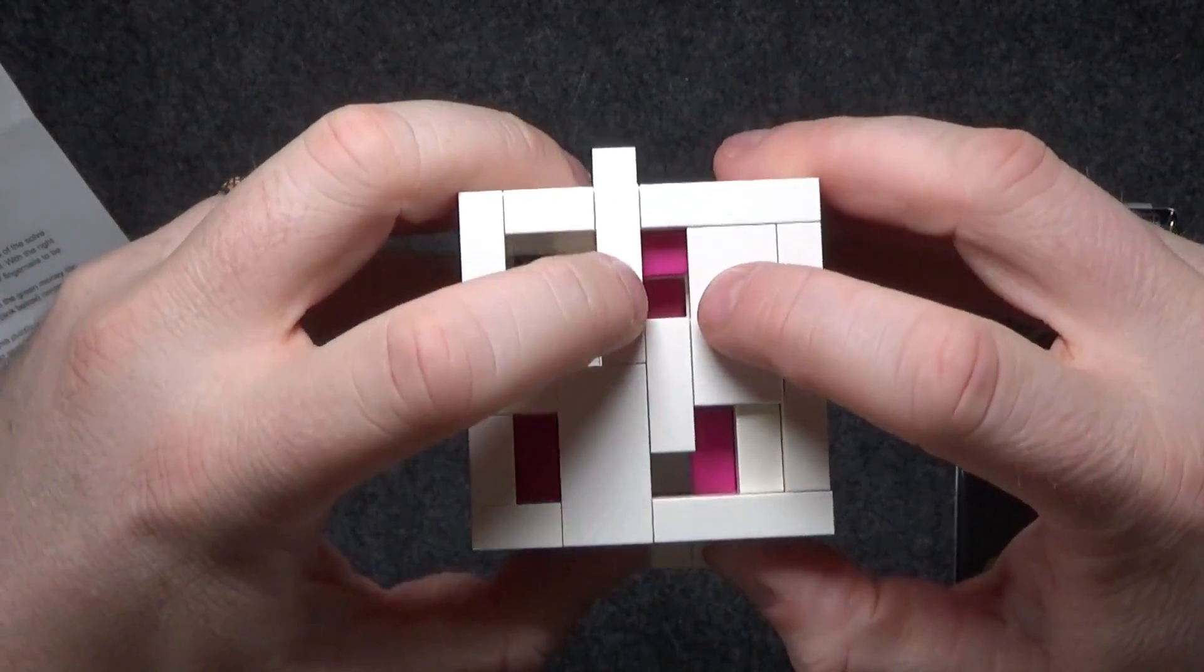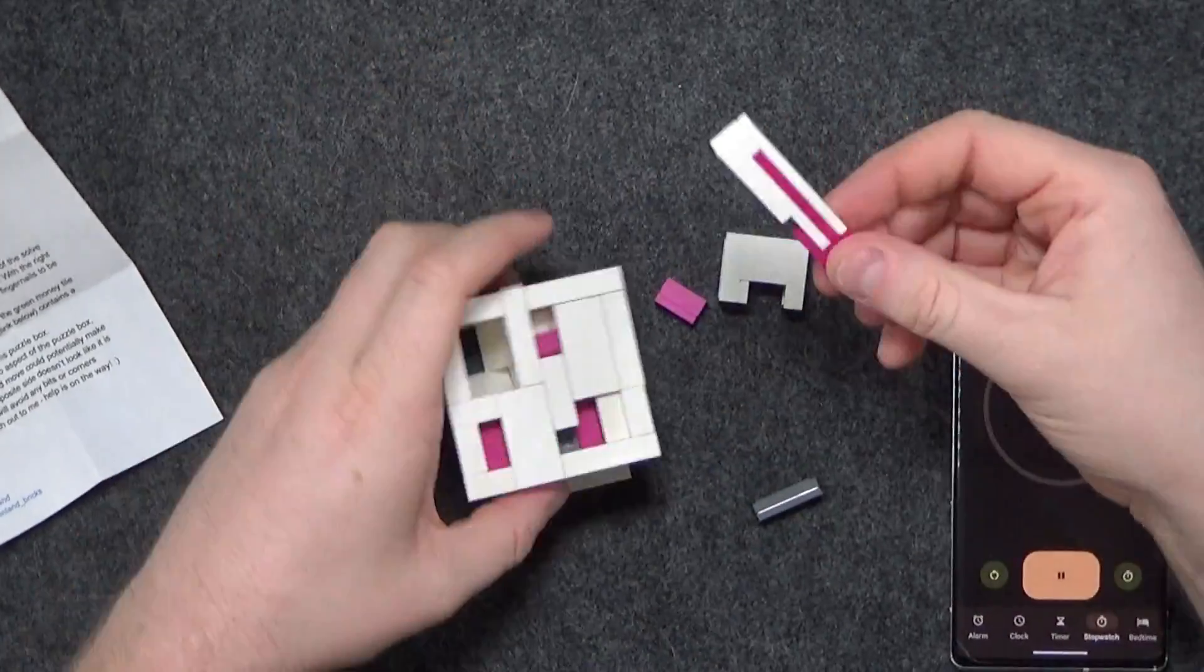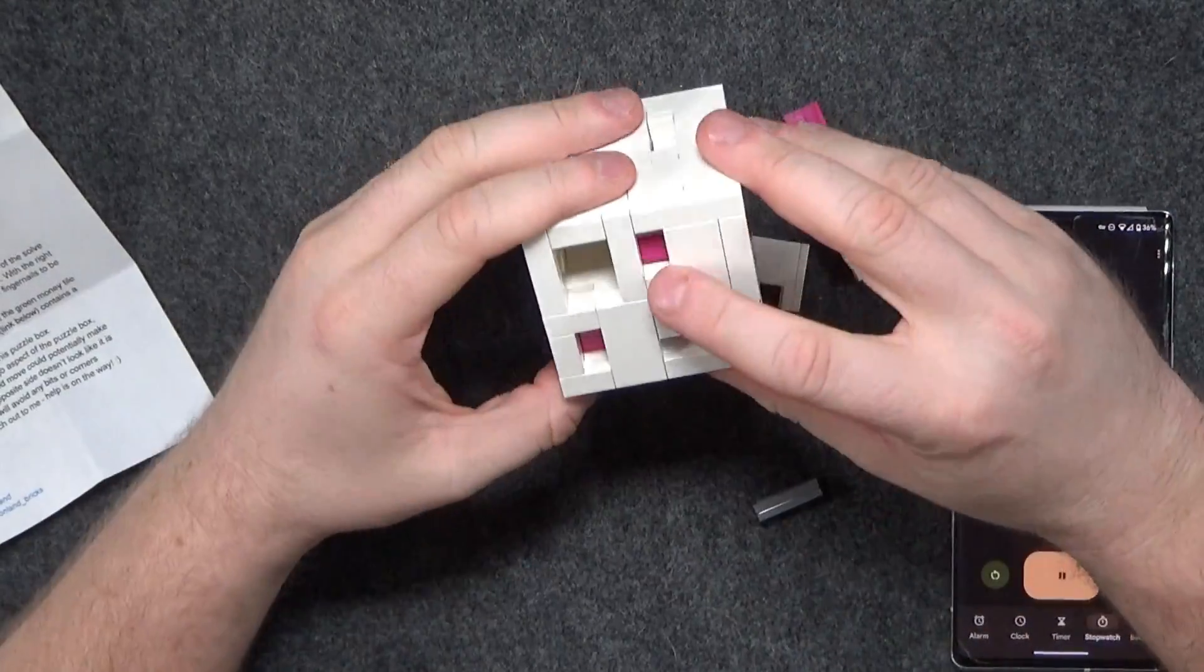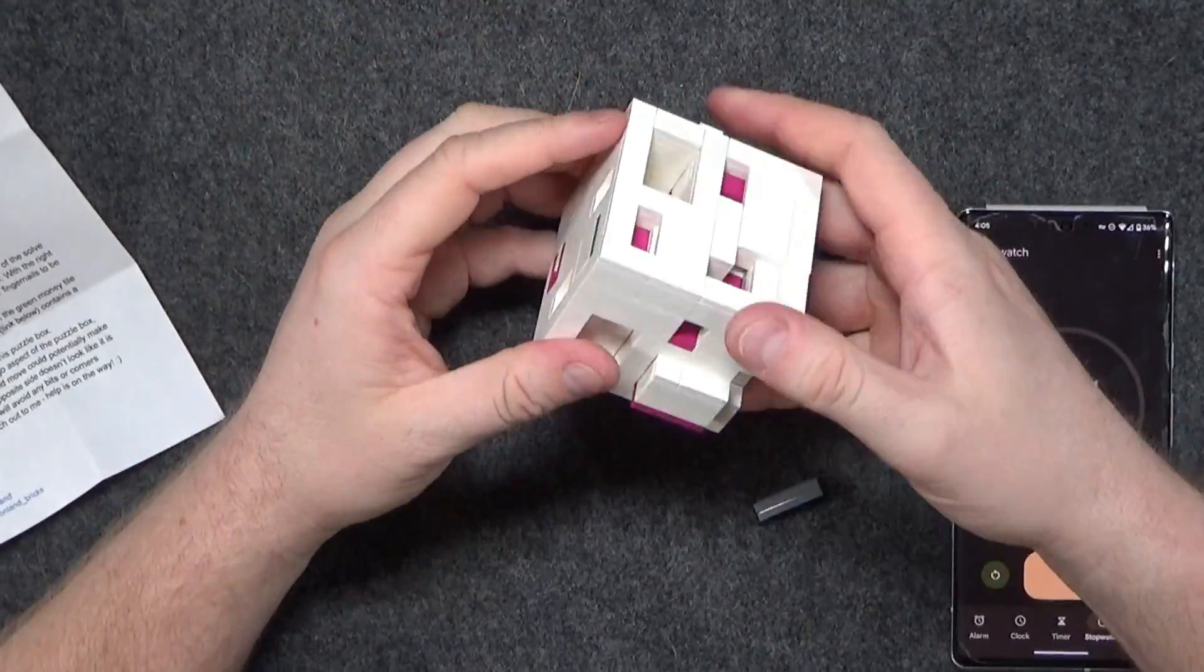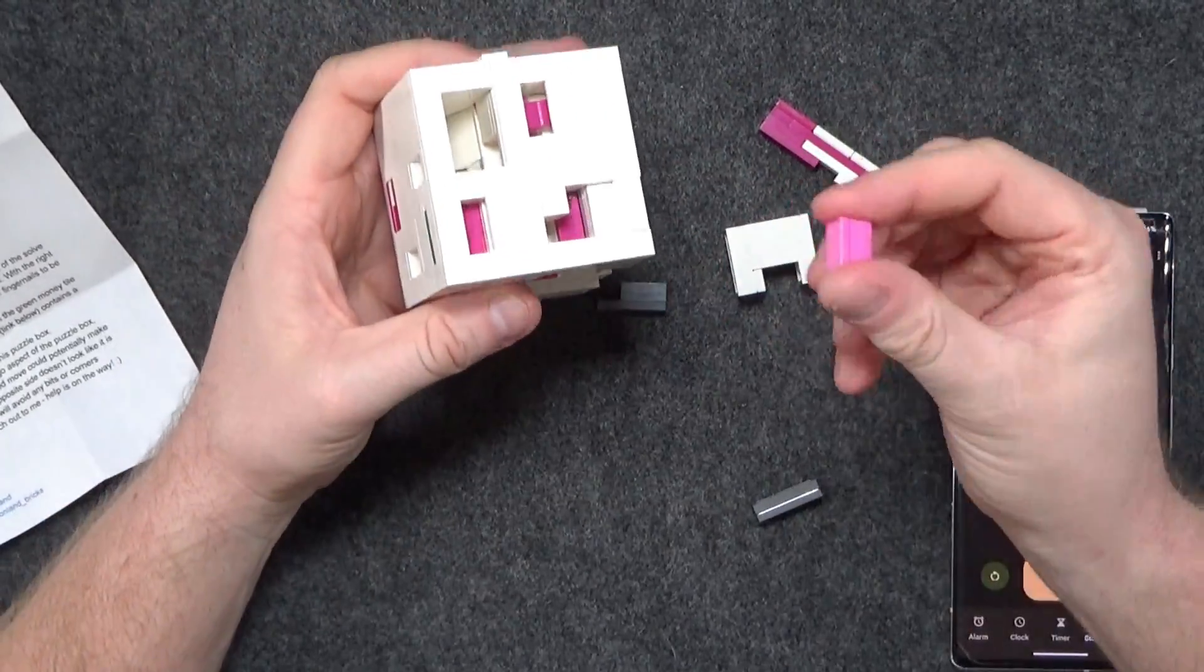Right. There's a pink piece. That was inside here, preventing me from pulling this out. Let's get this gray piece back out. There it is. Oh, we still have to find one more of these.